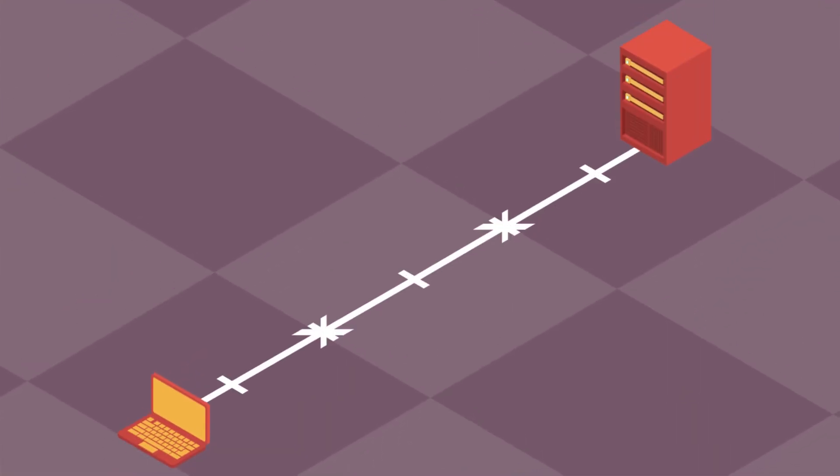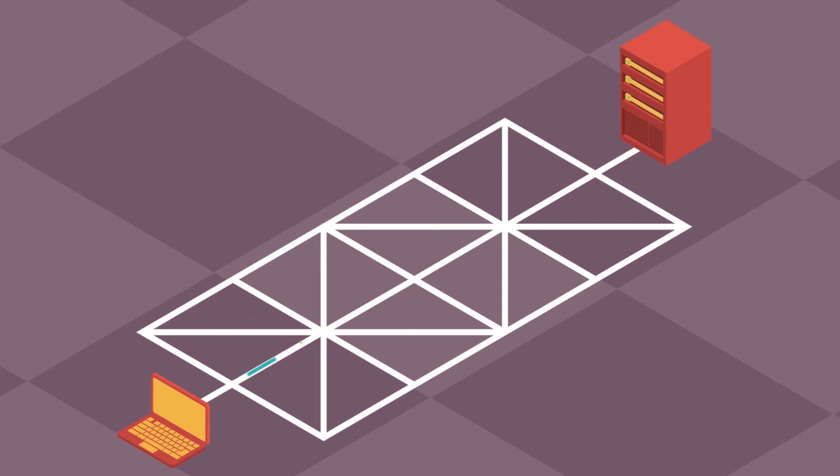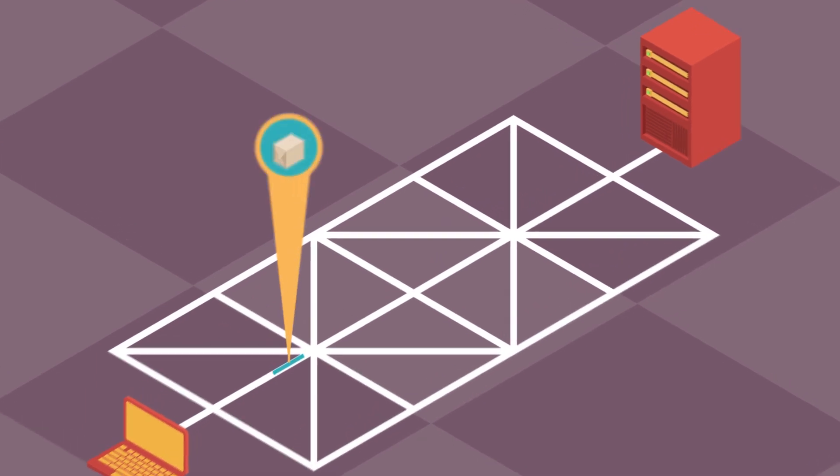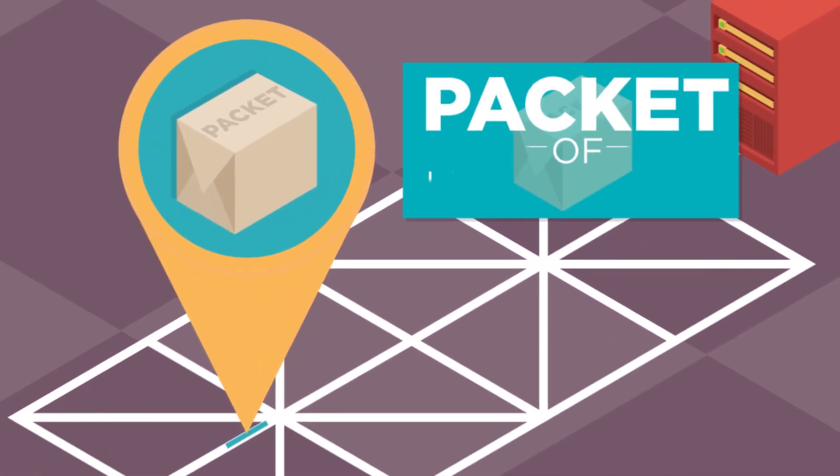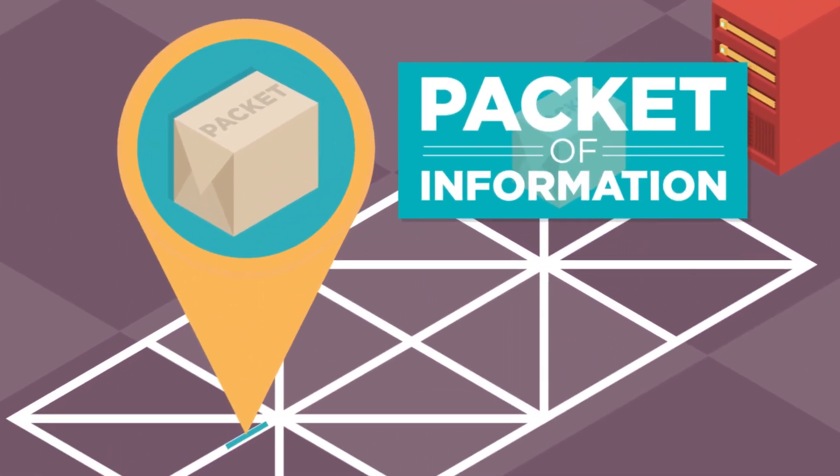Additionally, data gets broken down into smaller chunks called packets before the data gets sent. Those packets may arrive at their final destination out of order, since they might have traveled different paths along the internet to get there.